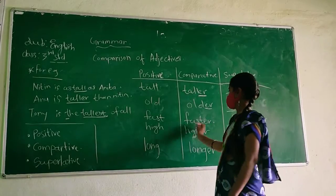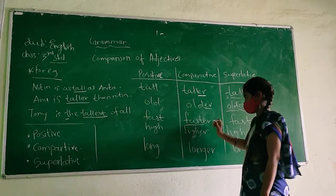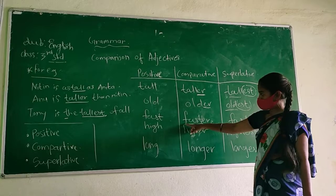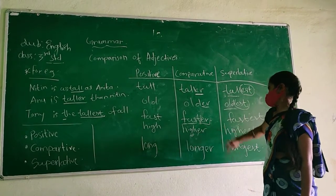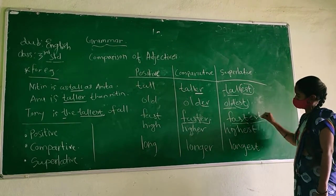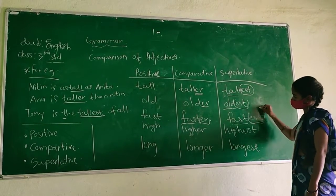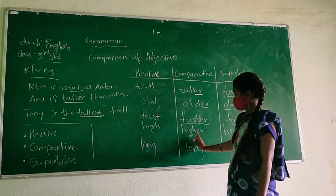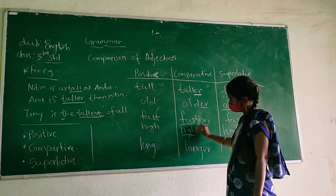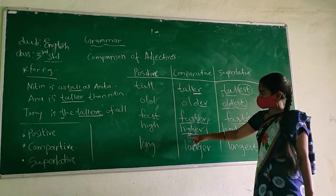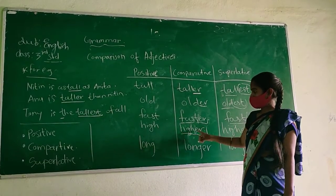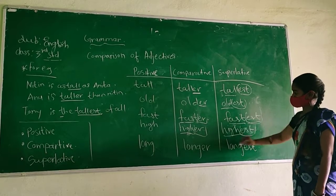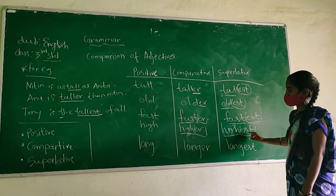Fast — again, spelling is the same, but there is E-R, so this is faster. E-S-T, fastest. High — same spelling, E-R, so this is higher. E-S-T, highest.